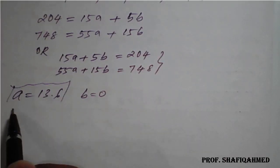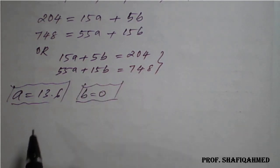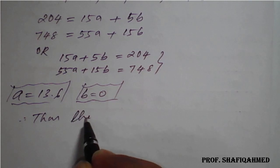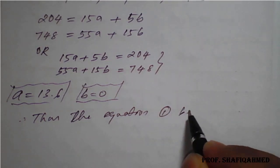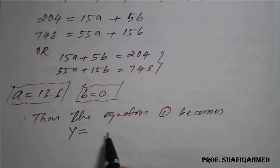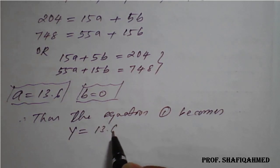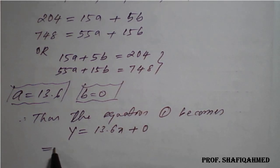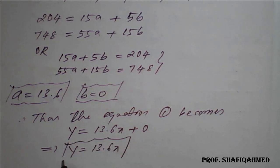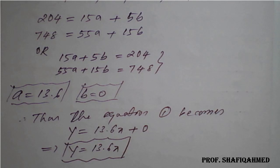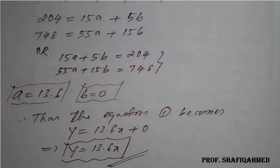We got the values a = 13.6 and b = 0. Therefore, equation 1 becomes y = 13.6x + 0, so the required best fit straight line for the given data is y = 13.6x. This is how we simplify a problem based on curve fitting using the method of least squares for a straight line.